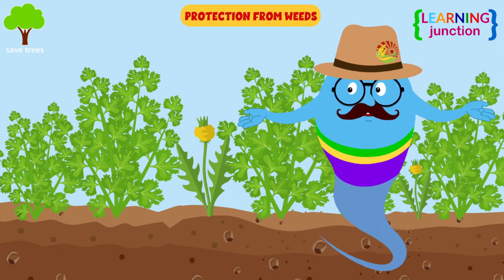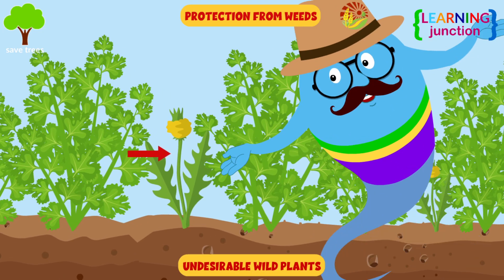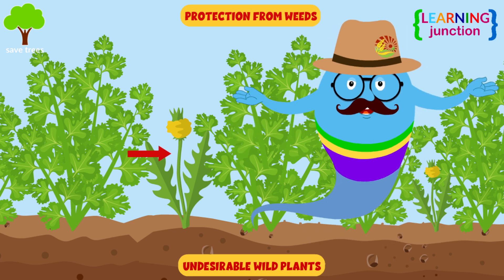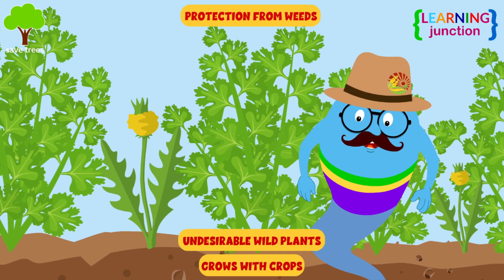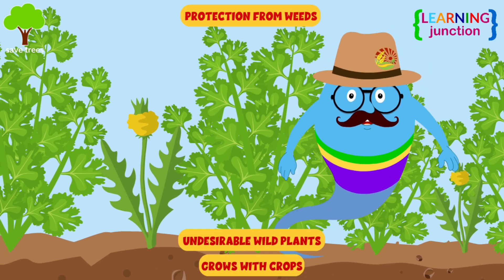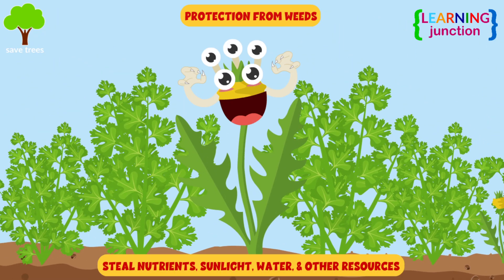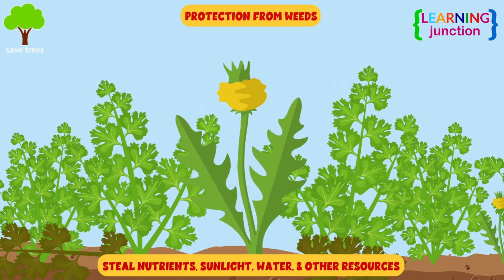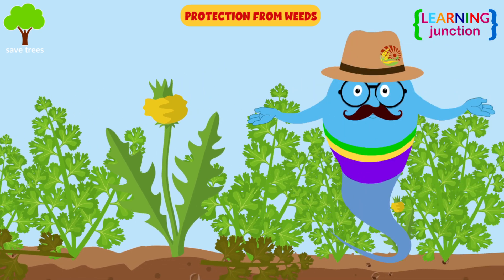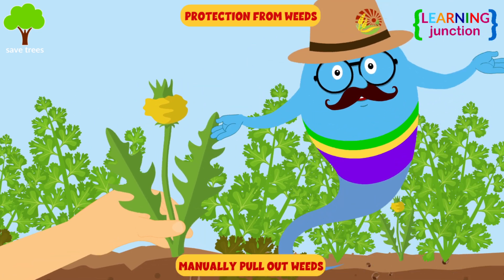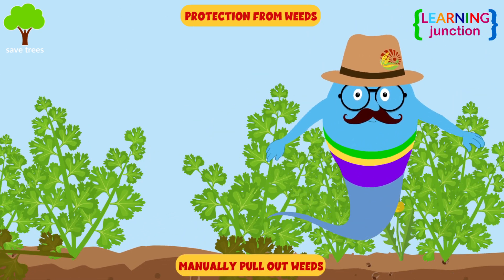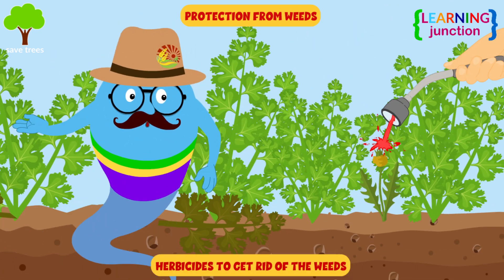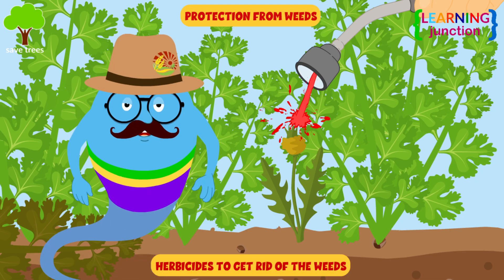Step 5: Protection from weeds. Weeds are undesirable wild plants that grow along the crops on the field. They steal the nutrients, sunlight, water, and other resources from the crops, and affect their growth. Farmers manually pull out weeds by hand, or they use herbicides to get rid of the weeds.